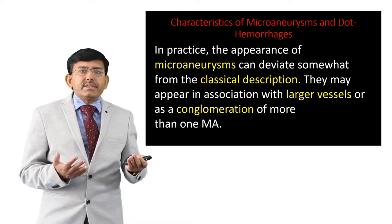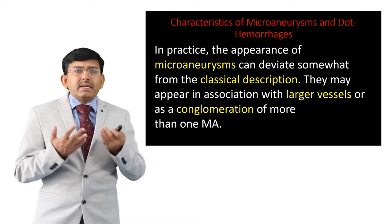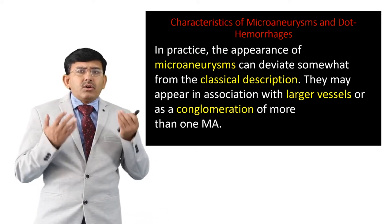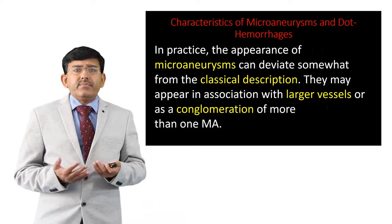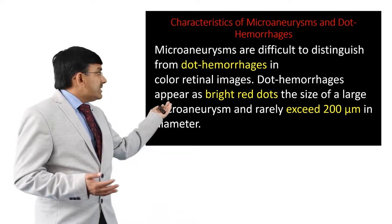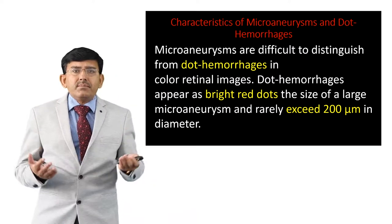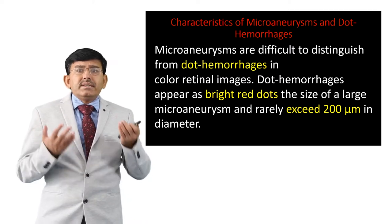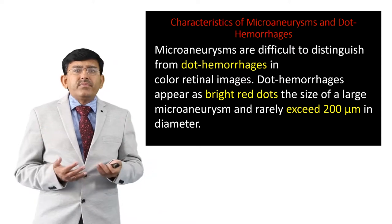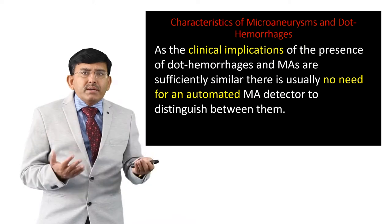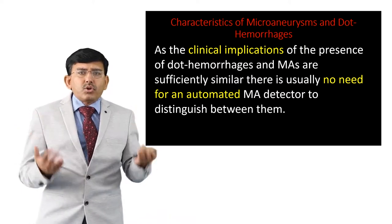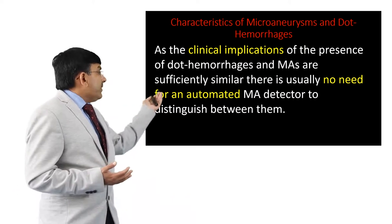In practice, the appearance of microaneurisms can deviate somewhat from the classical description. They may appear in association with larger vessels or as a conglomeration of more than one microaneurism together. Microaneurisms are difficult to distinguish from dot hemorrhages in color retinal images. Dot hemorrhages appear as bright red dots the size of large microaneurisms and rarely exceed 200 micrometers in diameter. As the clinical implications of dot hemorrhages and microaneurisms are sufficiently similar, there is usually no need for an automated detector to distinguish them from each other.